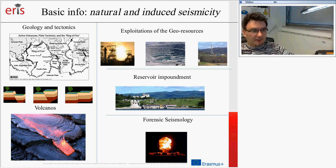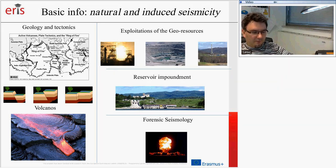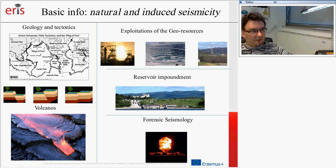Another kind of seismicity is called induced seismicity and is connected with human activities. This includes the exploitation of geologic sources like underground mining, open-pit mining, and oil or gas extraction. Another kind of induced seismicity is connected with water reservoirs — when we fill an artificial reservoir with water, we can observe seismicity. The last but not least is forensic seismology, a very interesting part that deals with nuclear explosions. It is very important even today, when we face phenomena connected with nuclear explosions in North Korea.